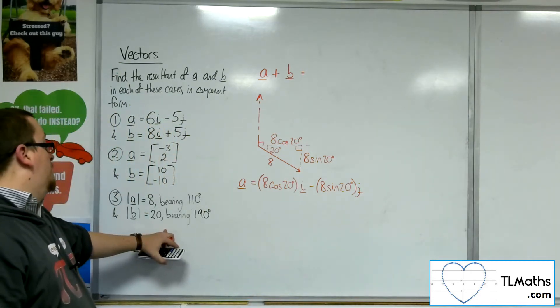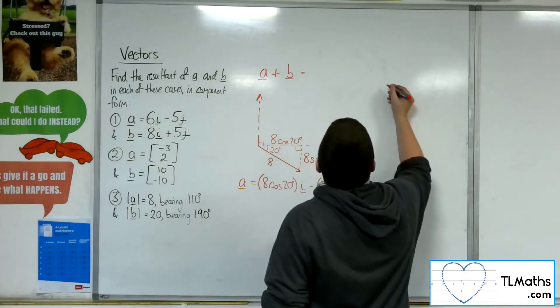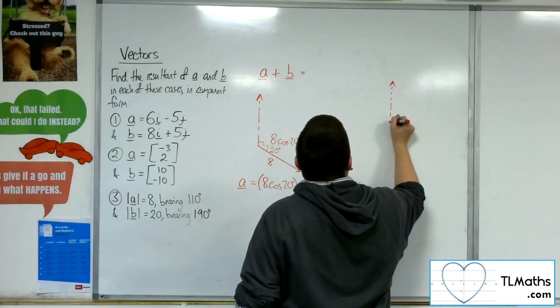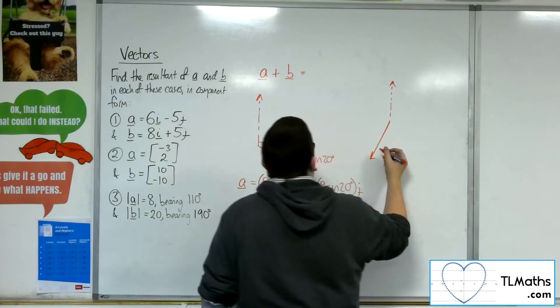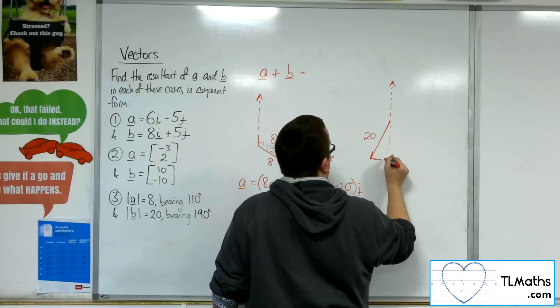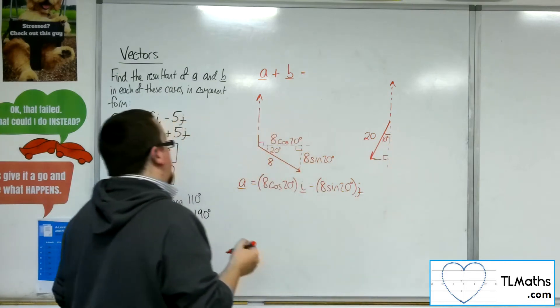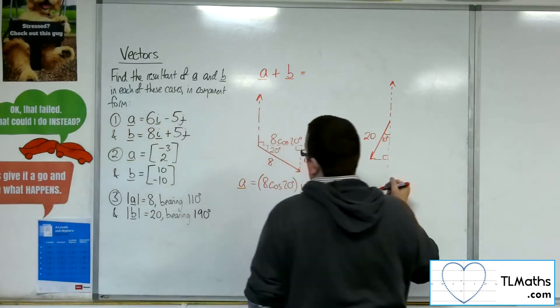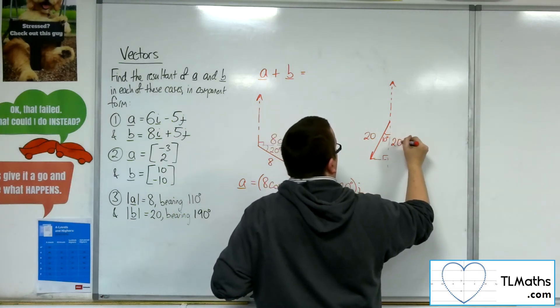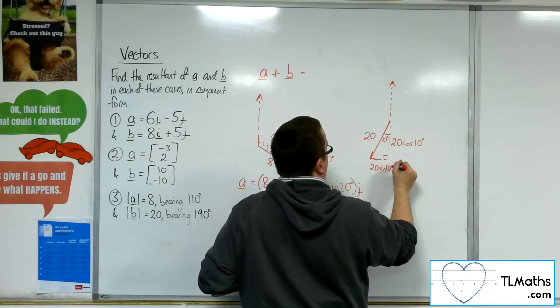Now for the second vector for b, we know that the magnitude is 20 and the bearing is 190. So if I draw in a north line, so 180, so 190, going off down this way, so that's of length 20. So I'll draw in a right-angled triangle, so that would be 10 degrees. So then we would have this as the adjacent side, so that would be 20 cosine 10 degrees. And this length would be 20 sine 10 degrees.